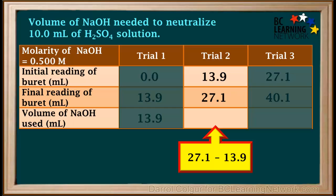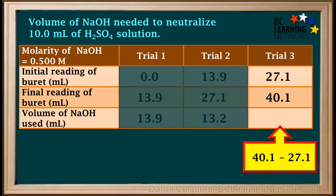In Trial 2, the volume used is 27.1 milliliters minus 13.9 milliliters, which is 13.2 milliliters. And in Trial 3, the volume used is 40.1 milliliters minus 27.1 milliliters, which comes out to 13.0 milliliters.